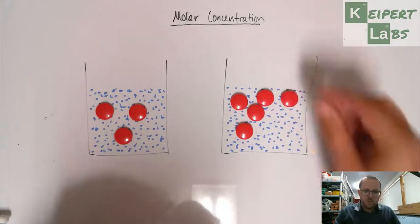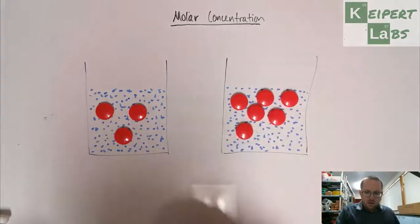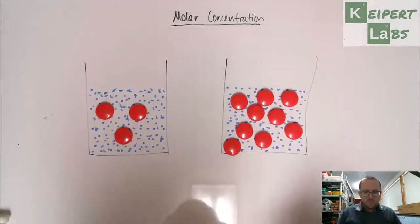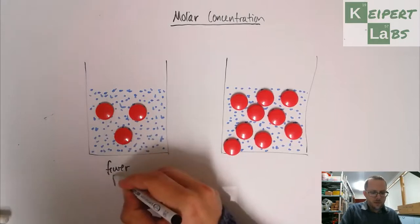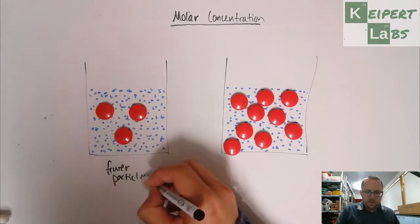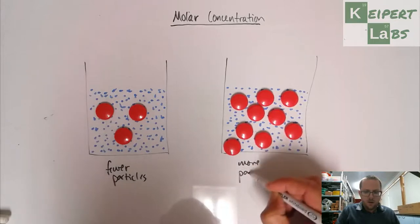So we have more particles. We've got for the same volume, we've got fewer particles in the one on the left than in the one on the right. So the one on the right has more particles, the one on the left has fewer particles.